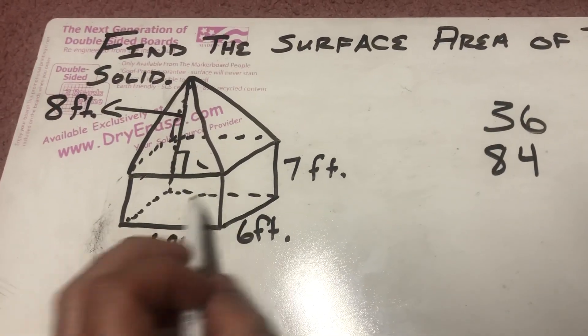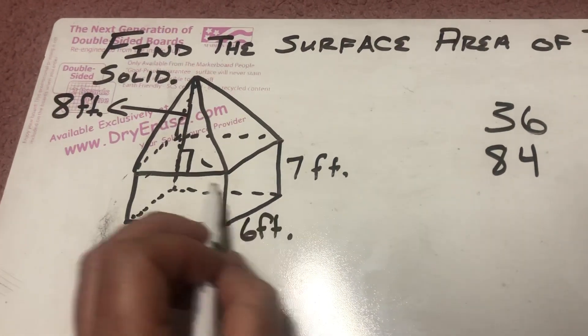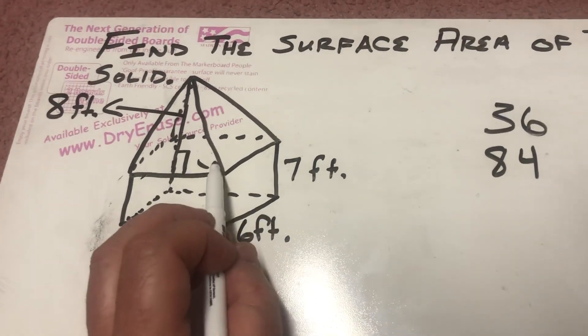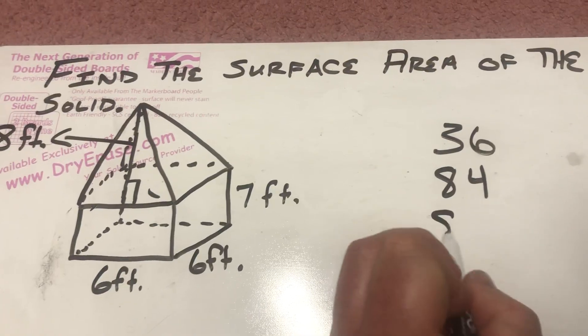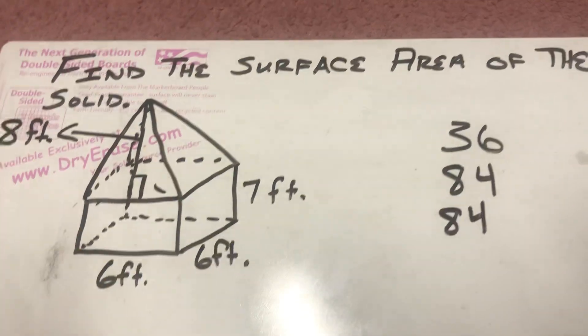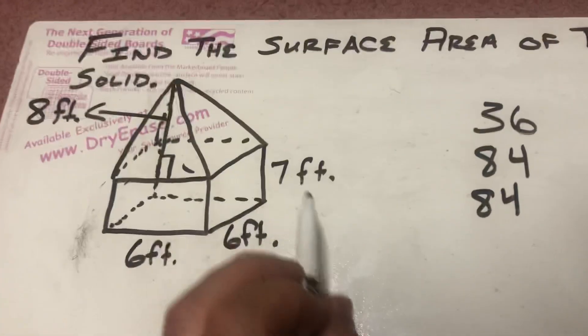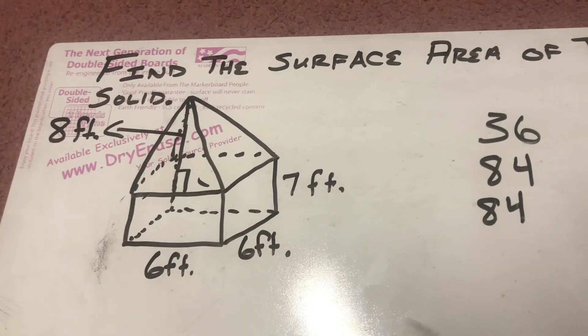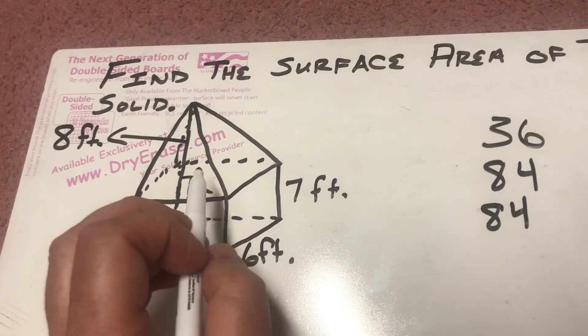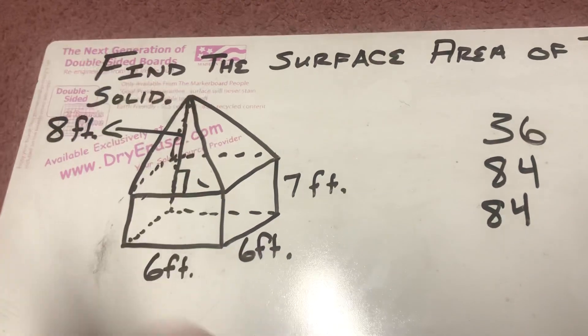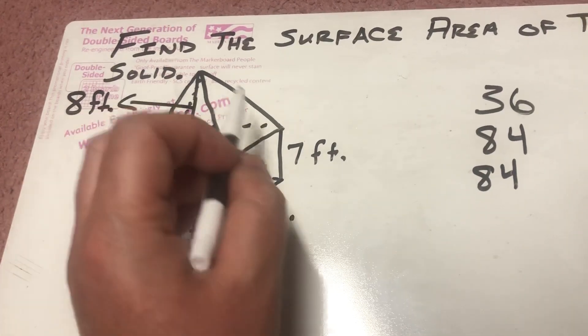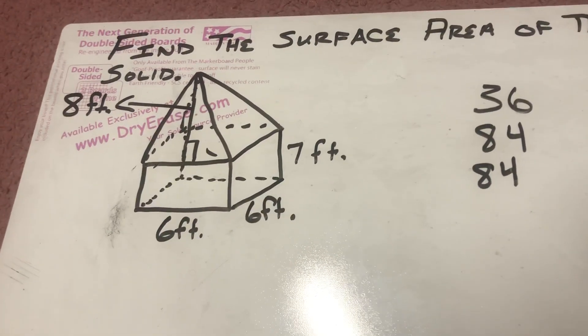But if I look at the front, that's also going to be 6 times 7 and 6 times 7. So, that's going to be another 42 and another 42, which again combine for a total of 84. This top one would be 36, but it's not part of our surface area. And it's also the base of the pyramid, but it's not part of the surface area. So, for the pyramid, all I need is the triangular faces, the lateral faces.